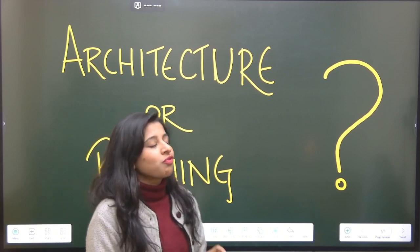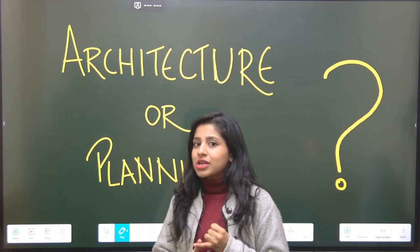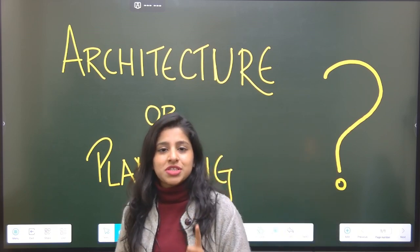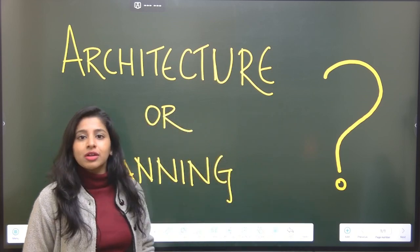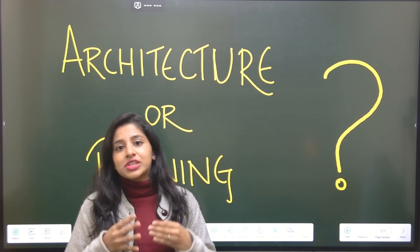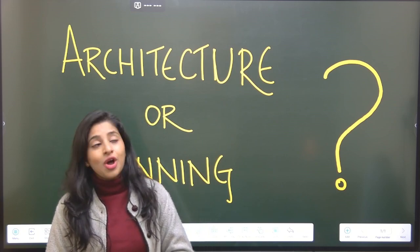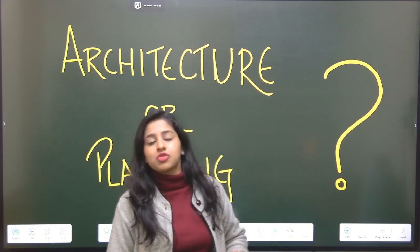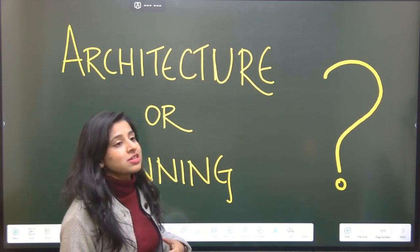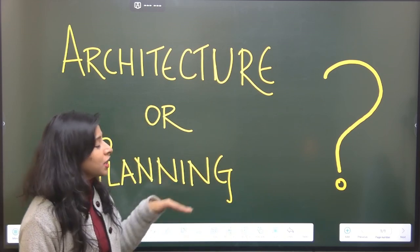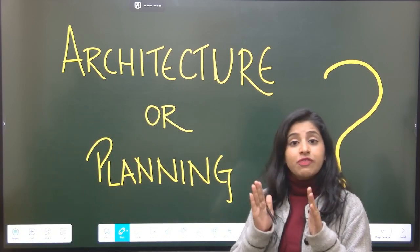But if you do not want to prepare for both, even that is fine. What you have to do is take out the GATE syllabus. GATE has clearly segregated between the two parts: architecture part and planning part. Read through the syllabus, read through the different subjects, and try to understand what each section comprises of. What are the different things that I have to study in architecture or planning? Based on your personal interest, you have to make a choice, if you want to make a choice.